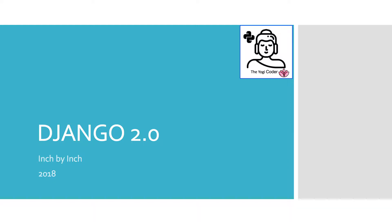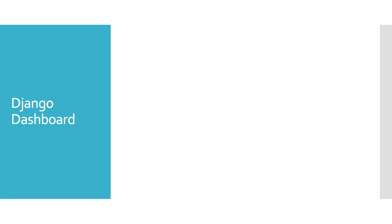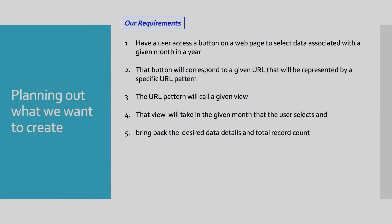Welcome back to the Django inch-by-inch series. Today we're going to cover a way to create a dashboard using views dynamically, so that we're able to change between different years and different months. Our requirements for this project are to have a user access a button on a web page to select data associated with a given month of a year.